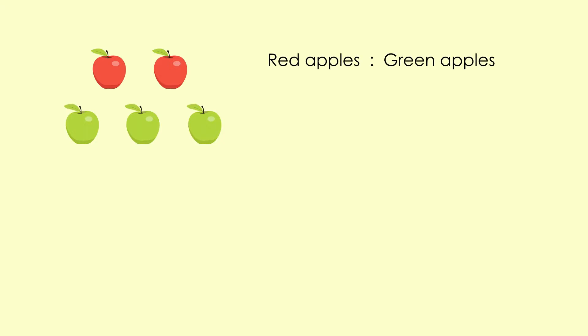Now, pupils, can you tell me the ratio of red apples to green apples here? Yes, correct! The ratio of red apples to green apples is two to three. And we can write this in a fractional form as two over three.